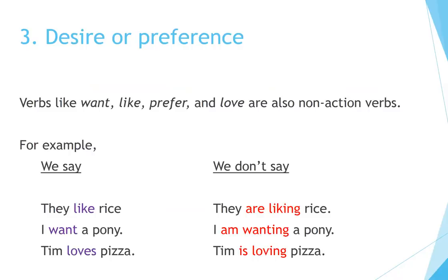Number 3: Desire or Preference. Verbs like want, like, prefer, and love are also non-action verbs. We say 'they like rice,' not 'they are liking rice.' We say 'I want a pony,' not 'I am wanting a pony.' We say 'Tim loves pizza,' not 'Tim is loving pizza.'